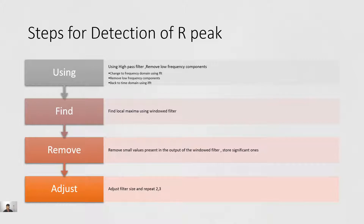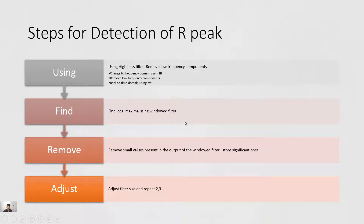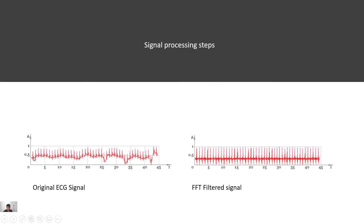The steps for detection of R-peaks are: first, we use a high-pass filter to remove low-frequency components. Then we use a windowed filter to find local maxima. After that, we remove small values in the output of the windowed filter, store significant values, adjust the filter size, and repeat this process two to three times.